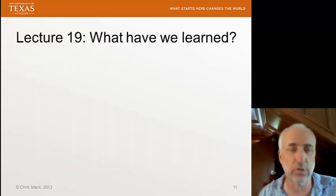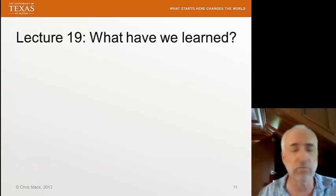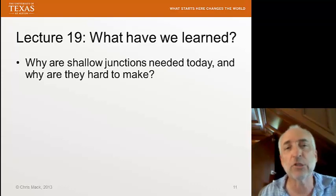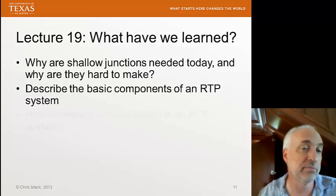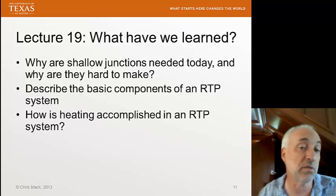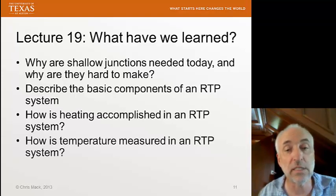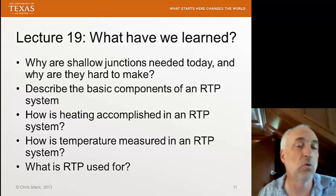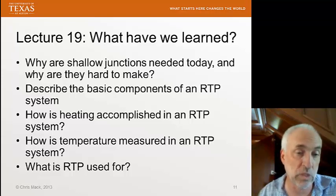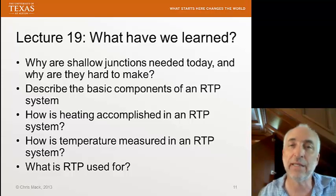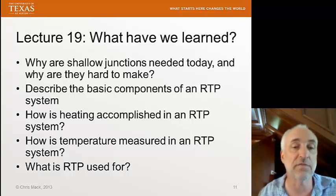Let's review what we have learned. You should be able to answer: why are shallow junctions needed today and why are they hard to make; describe the basic components of an RTP system; how is heating accomplished; what is the method of measuring temperature; and what is RTP used for in CMOS manufacturing. Next, we'll begin a long series of lectures on various ways of depositing materials on wafers — the topic of deposition.